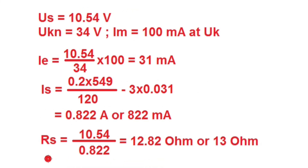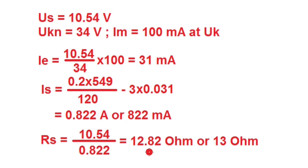Since the stabilizing voltage and relay setting current are now known, we calculate the stabilizing resistance: RS = Us / Is = 10.54 / 0.822 = 12.82 Ω. A 13 Ω stabilizing resistance can be connected in series with the residual coil of the motor earth fault protection.